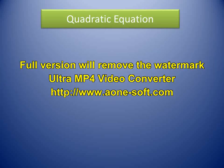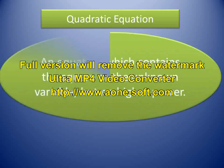A quadratic equation is defined as an equation which contains the square of the unknown variable, meaning the highest power of the unknown variable must be two. It is written as ax² + bx + c = 0, where x is the unknown variable. Here, a is the coefficient of x², b is the coefficient of x, and c is the constant number. a, b, and c are real numbers.